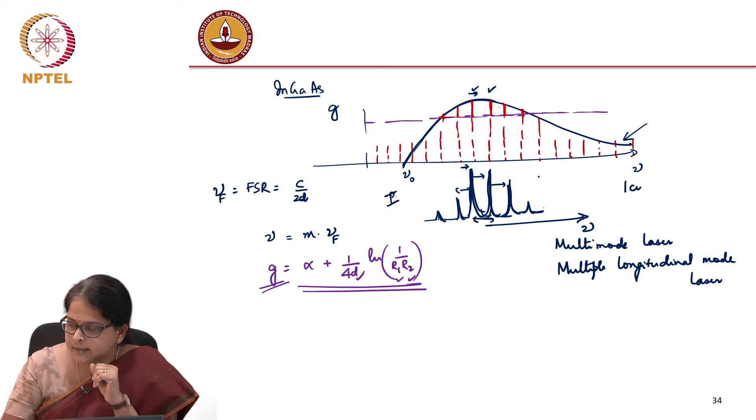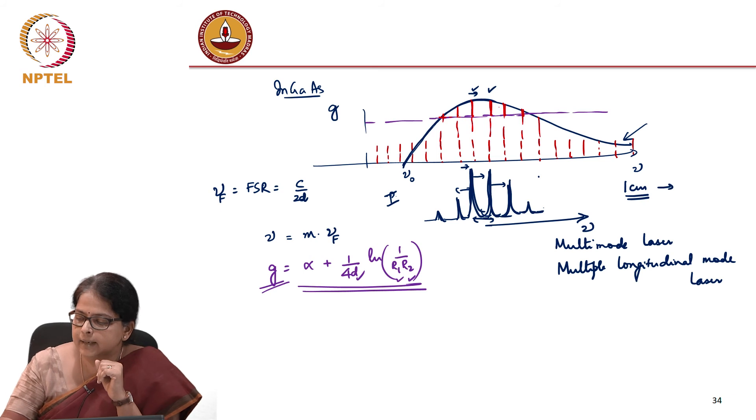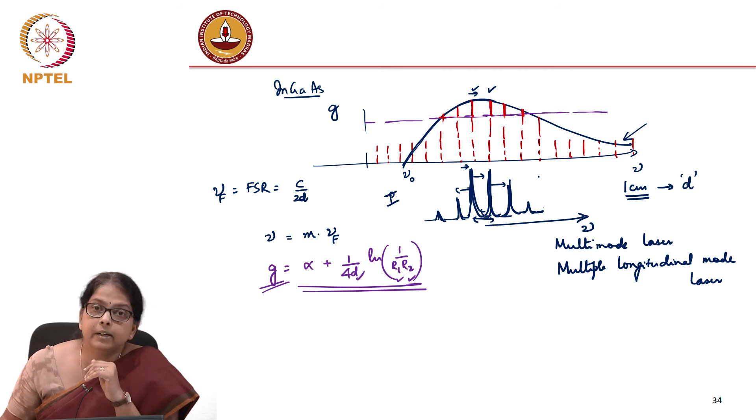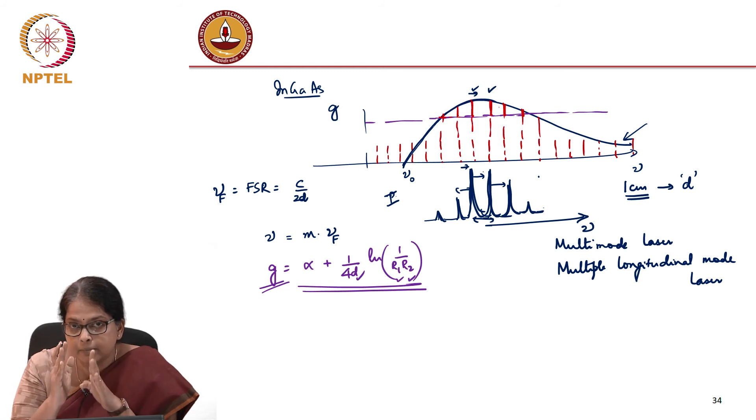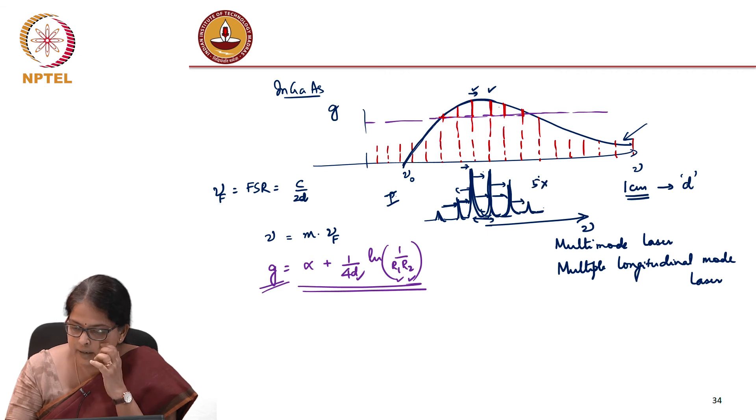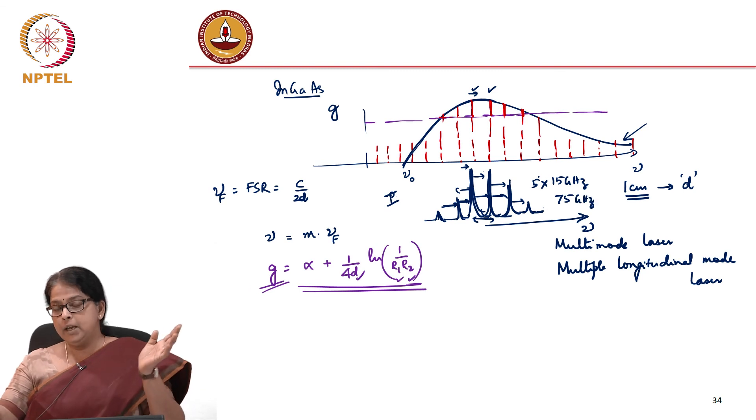If this particular laser has 1 centimeter as its d, and we have calculated that roughly, without considering the refractive index of the medium, this is 15 gigahertz is the spacing between the two lines, longitudinal modes of the laser. So the total spectral width can be 1, 2, 3, 4, 5. So it is about 5 times 15 gigahertz, which is about 75 gigahertz. This is like a broadband laser.